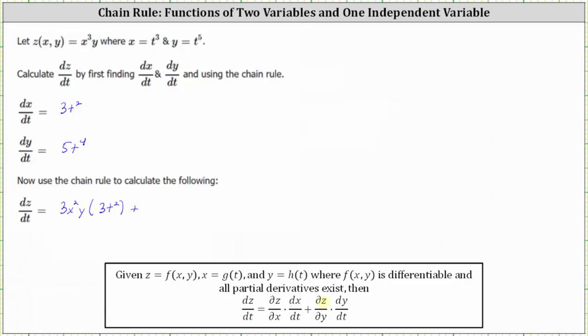And then we have plus the partial of z with respect to y. So now we differentiate z with respect to y, now treating x as a constant, which gives us x cubed. And then we have times dy dt, which we know is five t to the fourth.